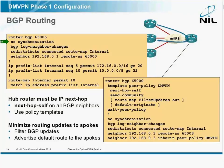On the hub router, you obviously have to list every spoke router individually, and listing all the eBGP parameters on every neighbor is a nightmare.